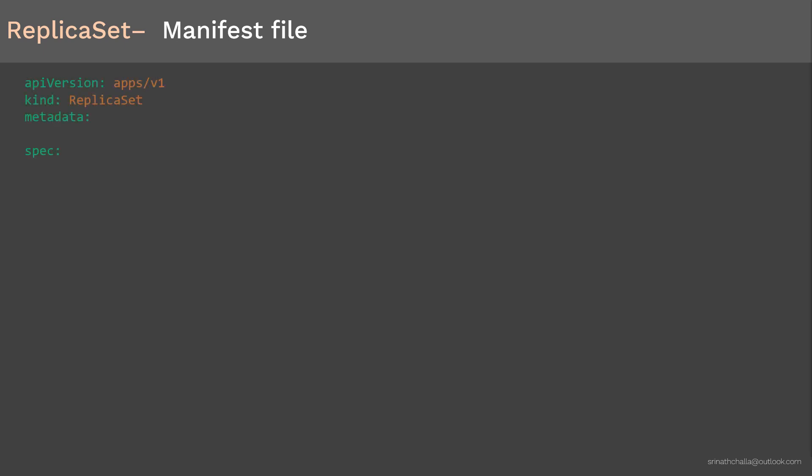The config file of a ReplicaSet is almost similar to the ReplicationController but with minor differences. Like any other Kubernetes object config file, ReplicaSet contains four top-level sections: apiVersion, kind, metadata, and spec. The apiVersion for a ReplicaSet is 'apps/v1'. The kind is 'ReplicaSet'. Under metadata, the primary fields are name — here 'nginxrs' — and labels, which we'll skip for now.